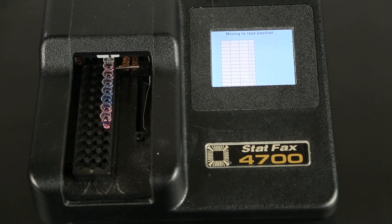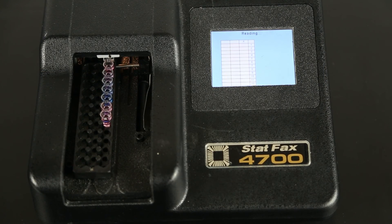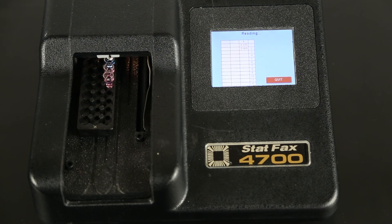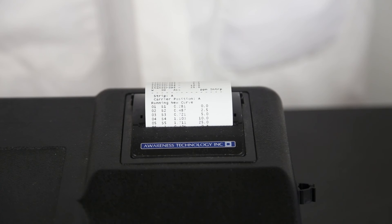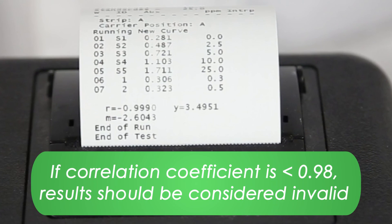The reader will begin reading and calculating your results. If the correlation coefficient is less than 0.98, the message 'invalid R less than 0.98' will be printed at the end of the run. Results should be considered invalid if this message appears.